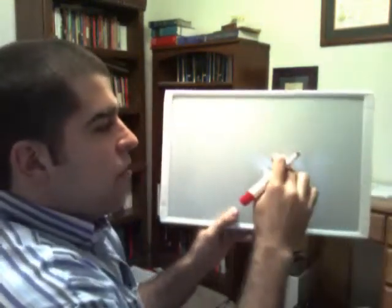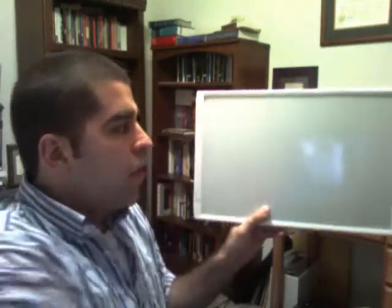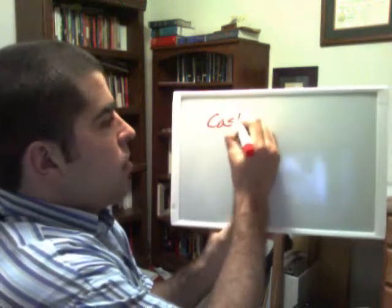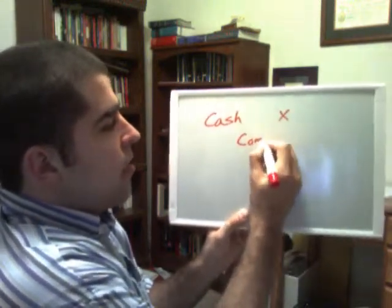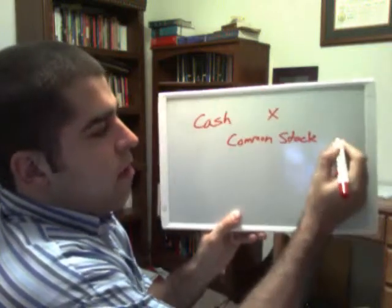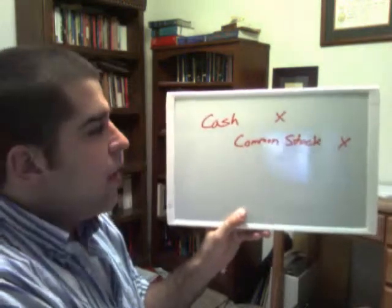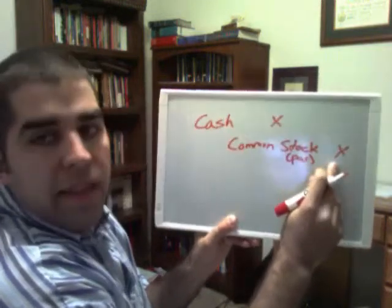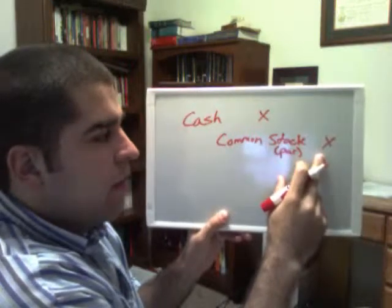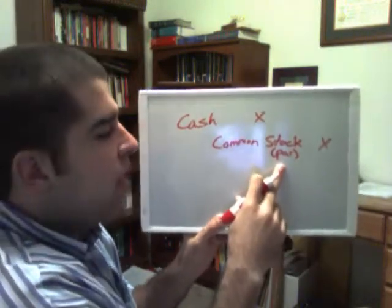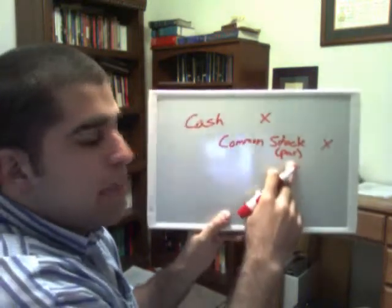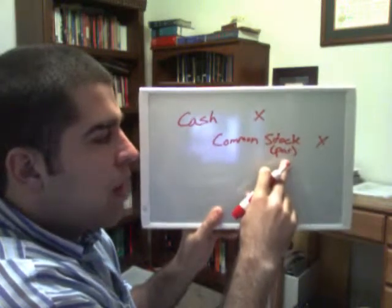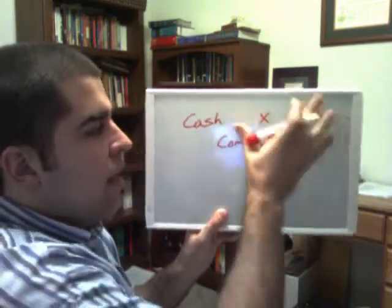What are the entries for issuing stock? Remember when we did the sole proprietorship, we debited cash and credited a capital account for the individual owner. A similar thing here — cash is going to be debited and common stock is our credit. The key thing to know is that the common stock credit entry is for the par value only. This is the only amount that goes into the common stock account upon issue. The par value is pretty arbitrary and doesn't have anything to do with the cash received — it's basically just the minimum amount we could issue a stock for.